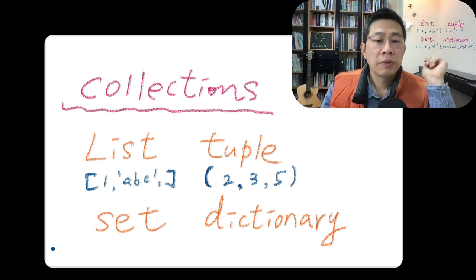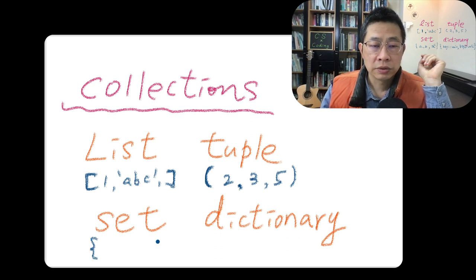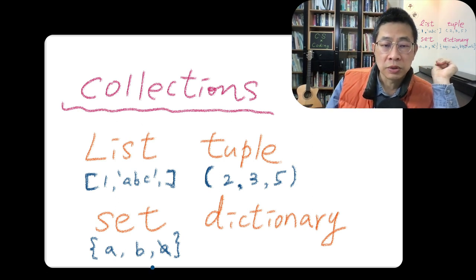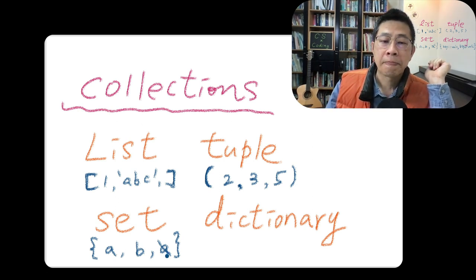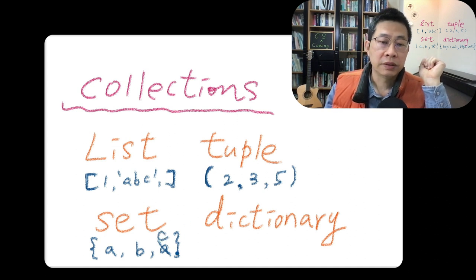So what about set? Set uses a curly bracket. And you can define A, B. You cannot do another A, because set cannot get a duplicate element. A, B, maybe C. That's a set.